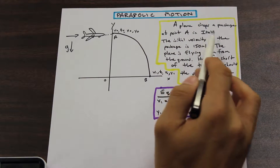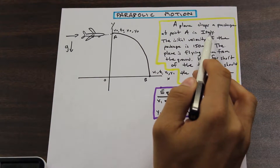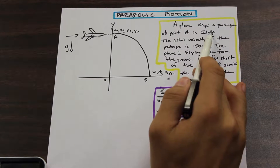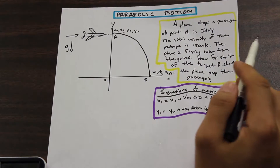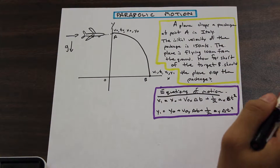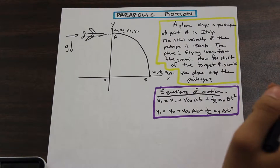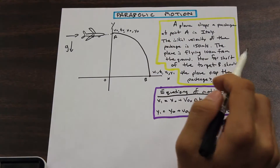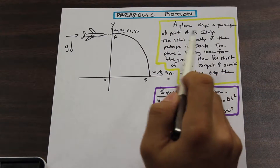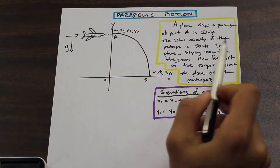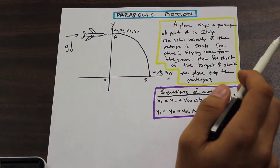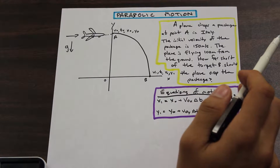The plane drops a package at point A. They gave us Italy — a country on Earth — because we know the value of gravity on Earth. If they said the moon or something like that, we'd need to use a different value for gravity. The initial velocity of the package is 150 meters per second, and the plane is flying 100 meters from the ground.